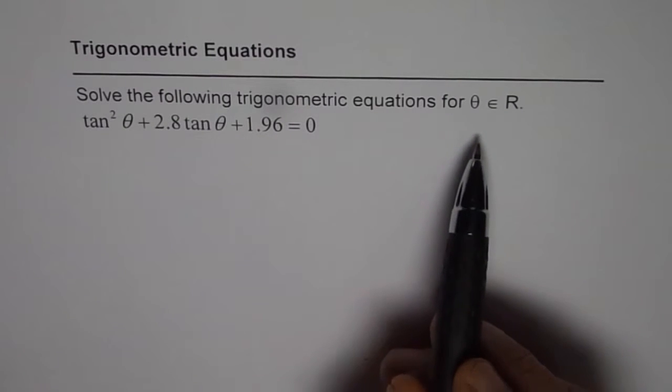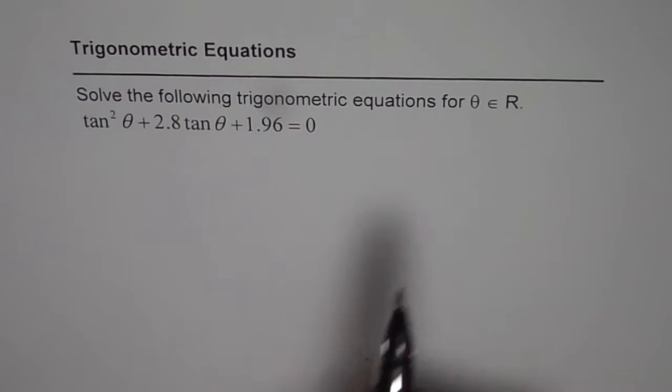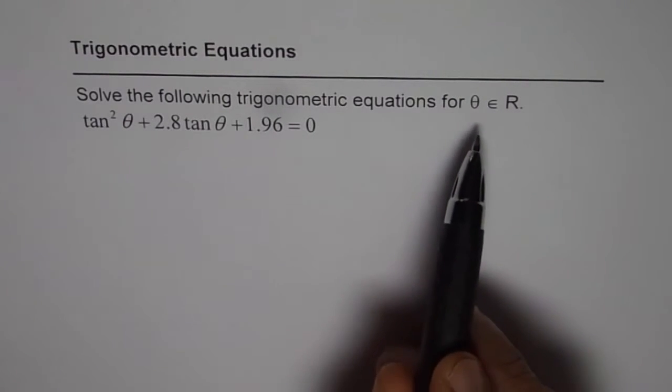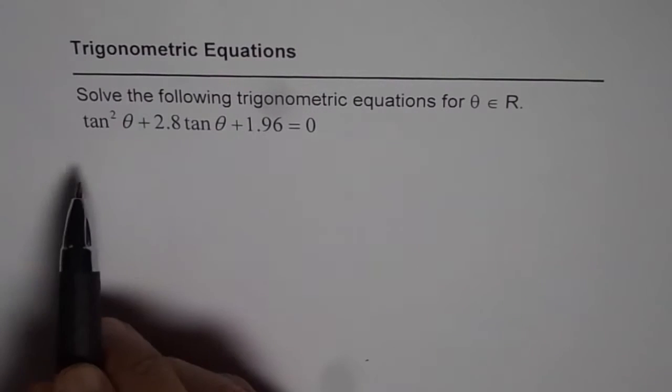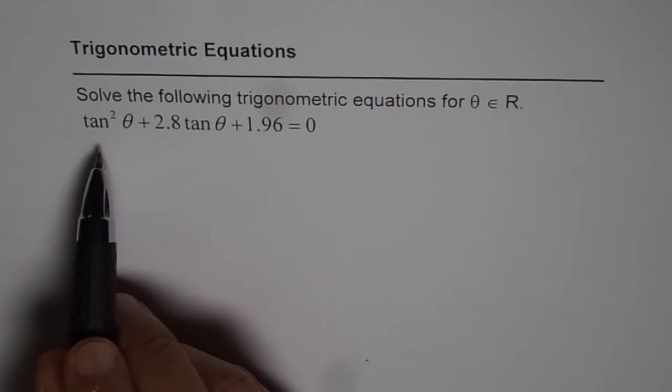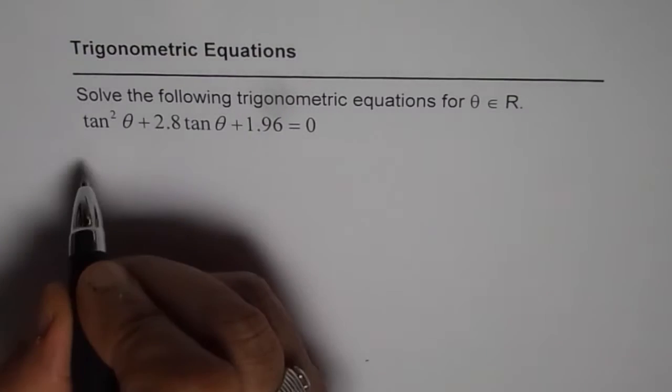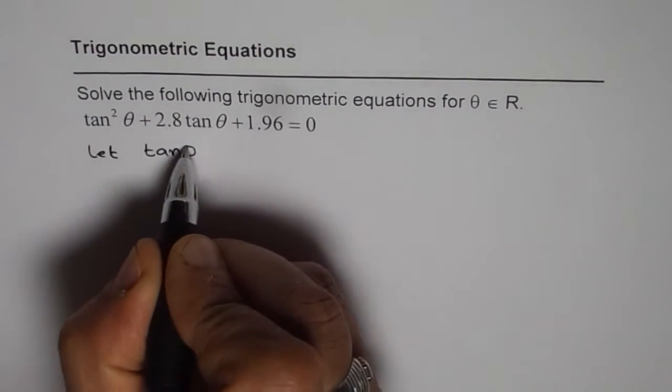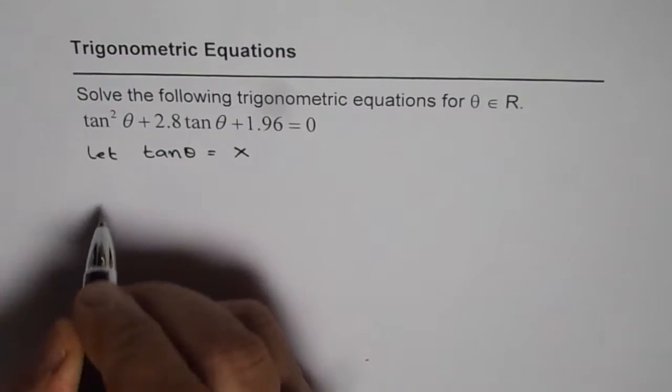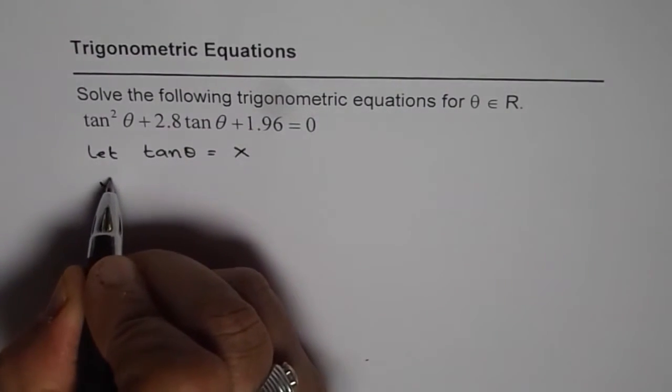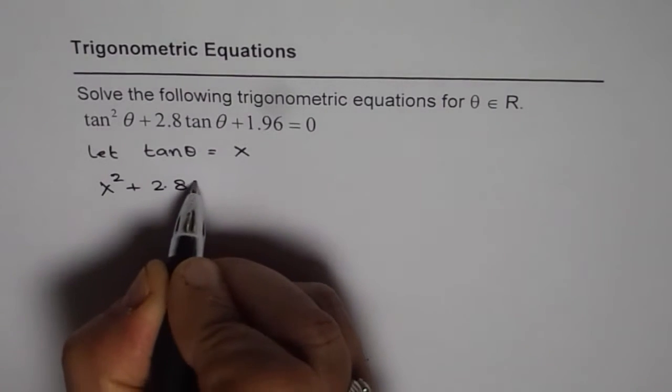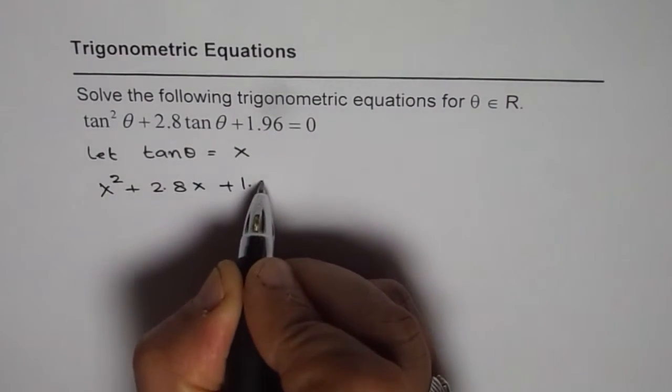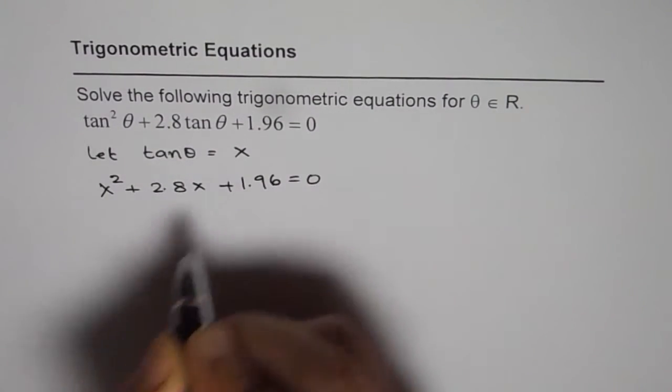Remember one thing when we are given theta belongs to real numbers we are looking for general solution. Now what we can do here is we can say that let tan theta be equal to x and then the equation will get transformed to x squared plus 2.8x plus 1.96 equals to 0.